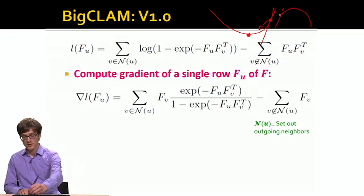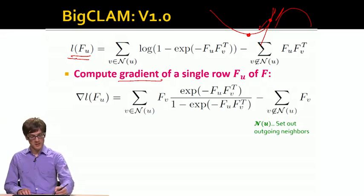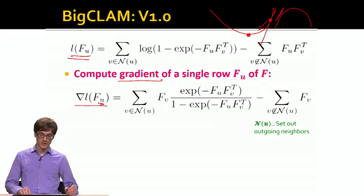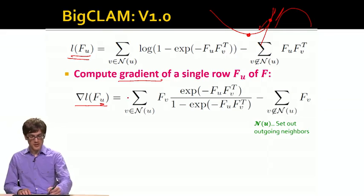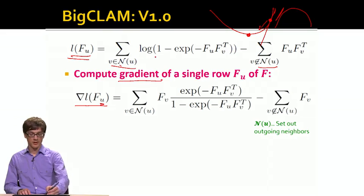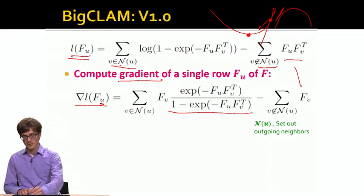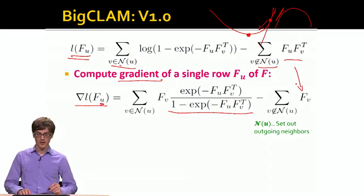In order to say what is the slope at a given point, we need to compute the gradient or the derivative of the log likelihood. So here is the derivative of the log likelihood with respect to a given row. And it's very simple. I have a summation over the neighbors of a given node and a summation over the non-neighbors of a given node. Computing the derivative of the first part gives us the following expression. And then computing the derivative of the second part of this summation is even easier. It's basically just the F_v that is surviving.